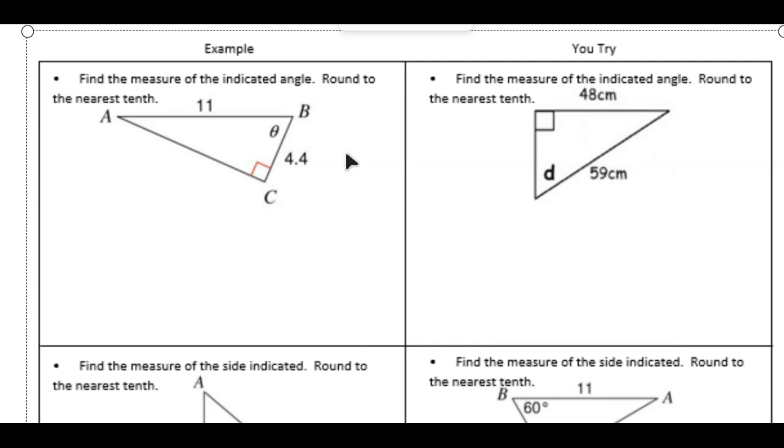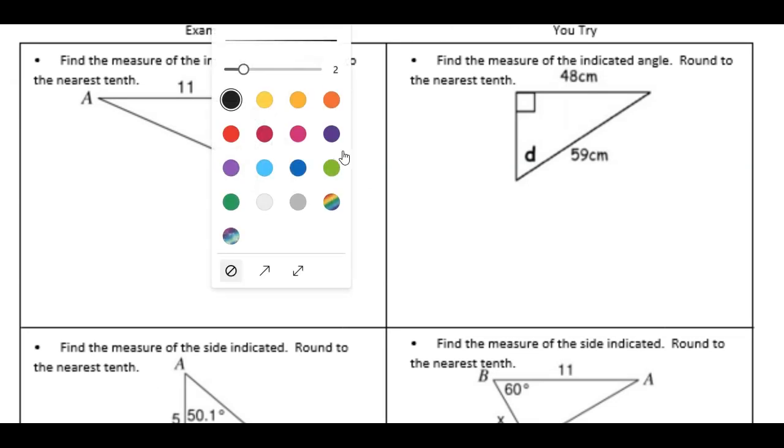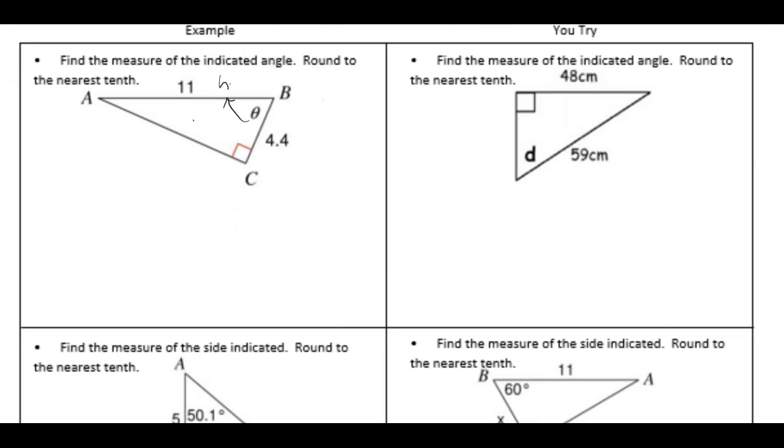From our theta perspective, we have the hypotenuse and the adjacent. So KATOA, K-A-H, this is cosine.